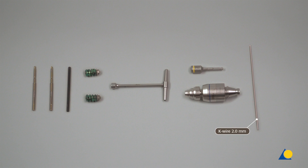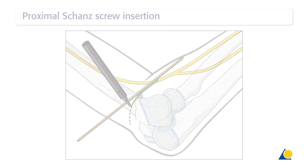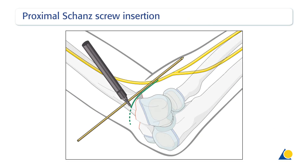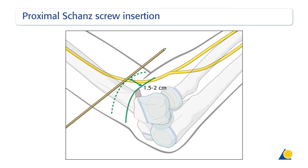A 2.0 mm K-wire will be used to prevent rotation of the distal fragment at the fracture site. In a clinical situation, the proximal fracture level is identified under image intensification with the help of a K-wire. Using this line for reference, the safe level for screw insertion is 1.5 to 2 cm proximal to the fracture level; more proximal insertion can damage the radial nerve.